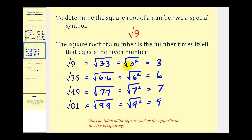Notice here where we have the square root of three squared — the square root and the square undo each other, and the result is just three. Here we have the square root of six squared; the square root and the square undo each other, and the result is one factor of six.